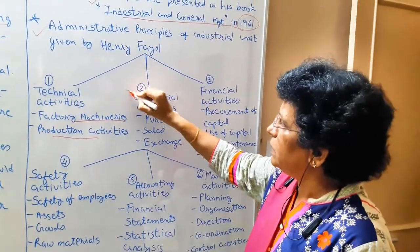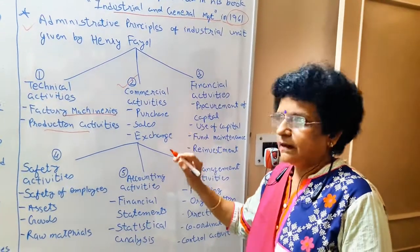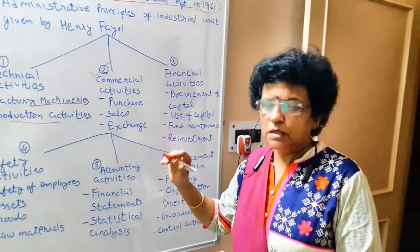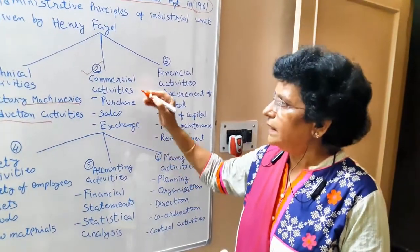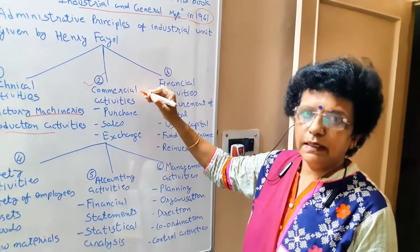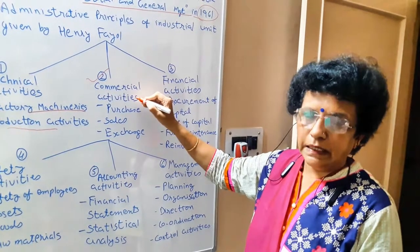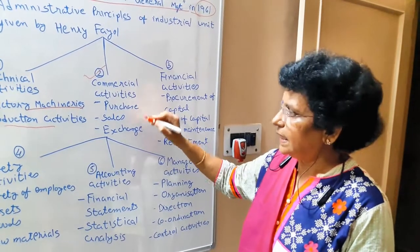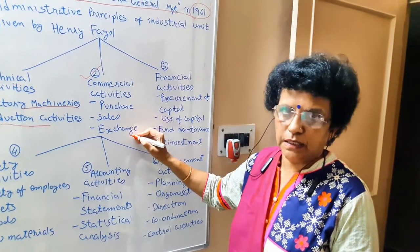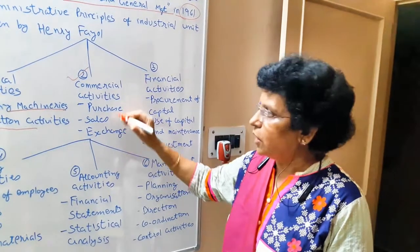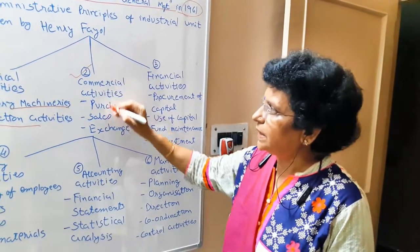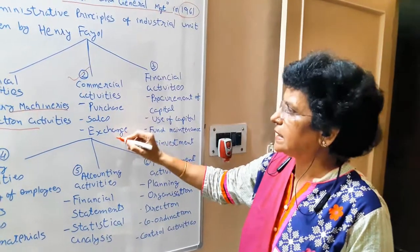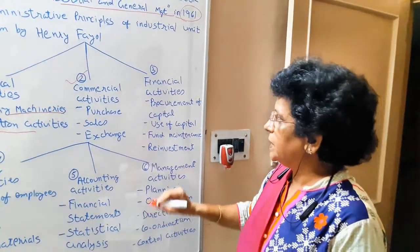Second, he talked about commercial activity. The other most important activities are commercial — meaning related to trade, related to purchase and sales, and related to exchange. So commercial activity is classified into purchase, sales, and exchange.